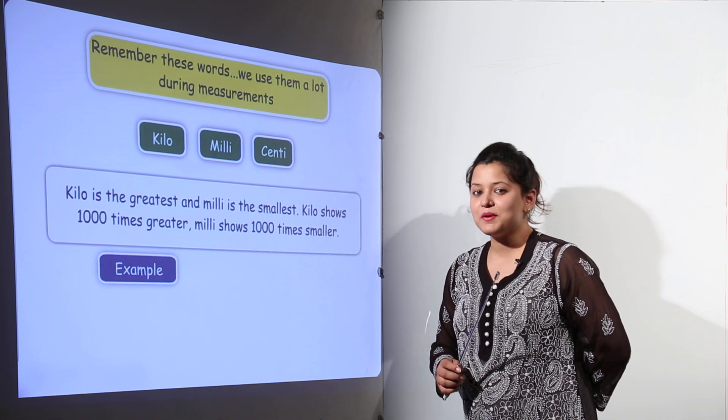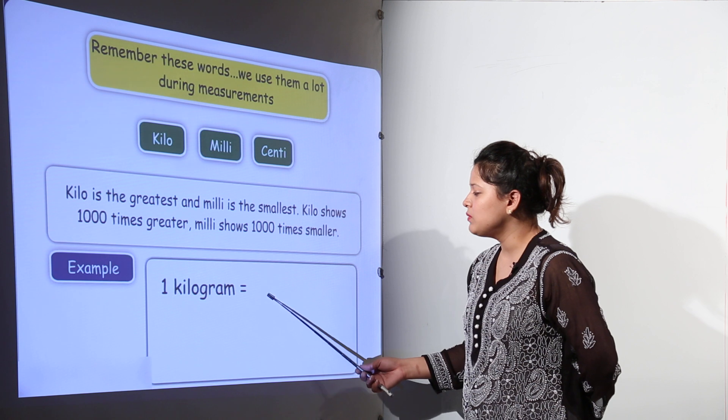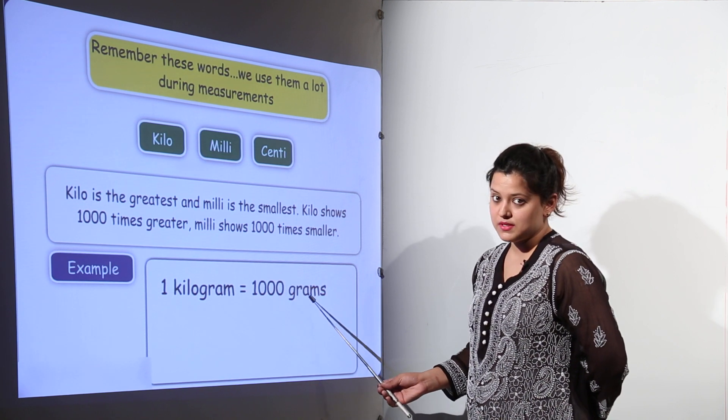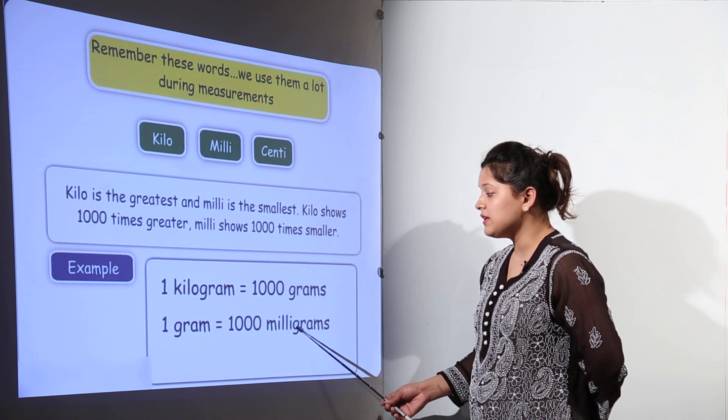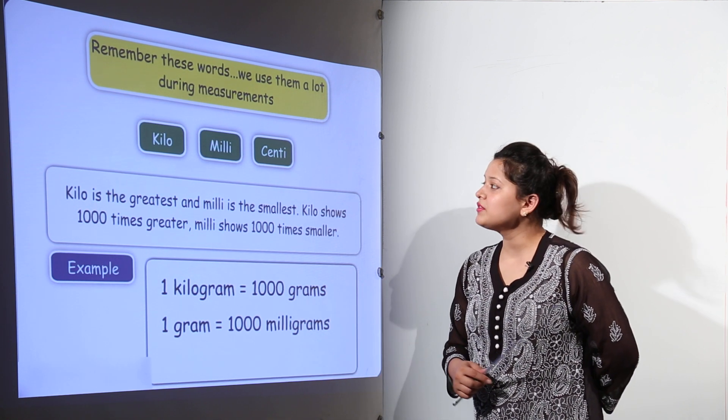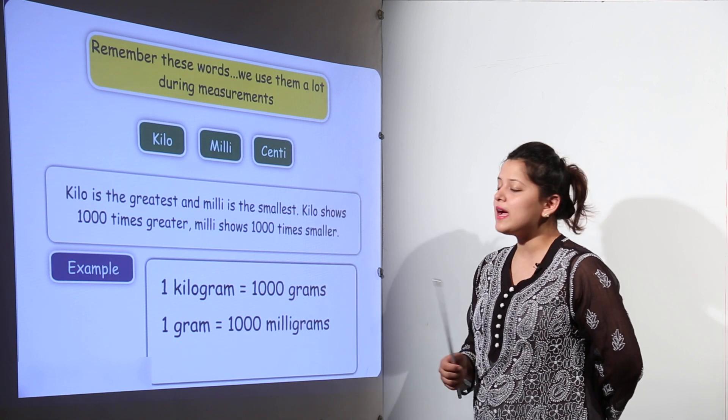For example, if I show one kilogram would be equal to one thousand grams. Whereas one gram can be written equal to one thousand milligrams. So you see the difference between kilo, milli and centi.